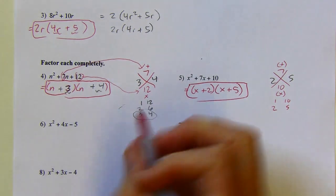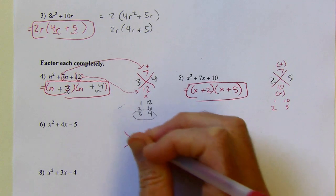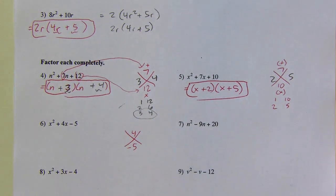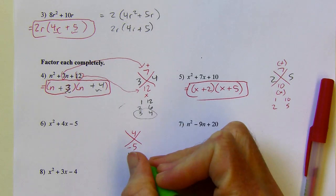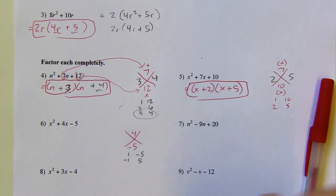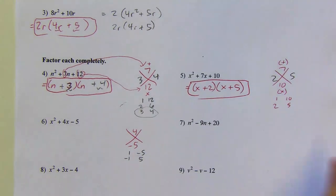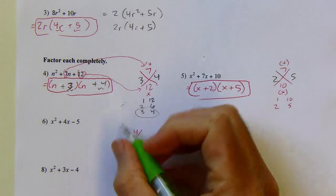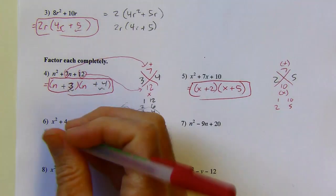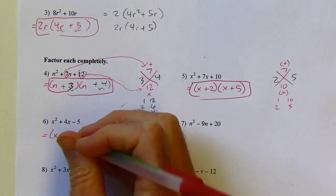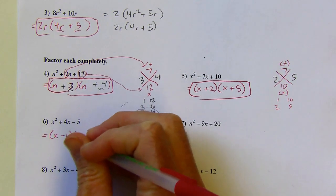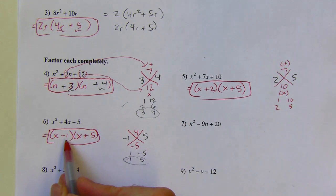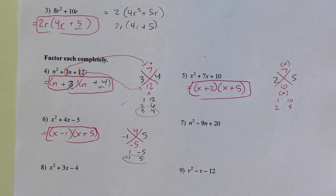Since this is the first one involving a negative, I'll still do a diamond problem. Multiplying to get negative 5, I could do 1 times negative 5 or negative 1 times positive 5. Only one of those adds up to positive 4 — it's 1 times negative 5... wait, negative 1 and positive 5. So I've got x minus 1 and x plus 5. The 1 has to be negative and the 5 has to be positive for it to work.